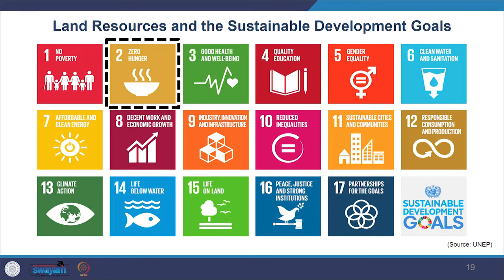Land is closely connected with sustainable development goals. It is very much connected with SDG 2, where we intend to end hunger, achieve food security and improve nutrition, and promote sustainable agriculture. The very specific target for this goal includes ensuring access to sufficient, healthy and nutritious food, especially for the most vulnerable groups. In order to achieve this, it will be very important to work on land resources to improve their conditions and status.